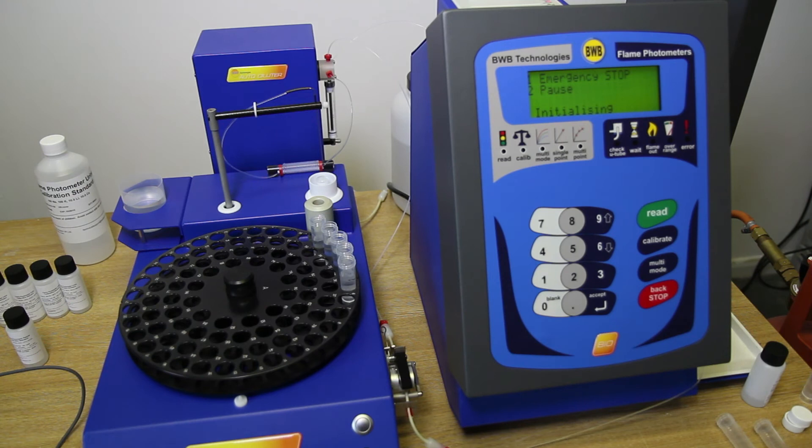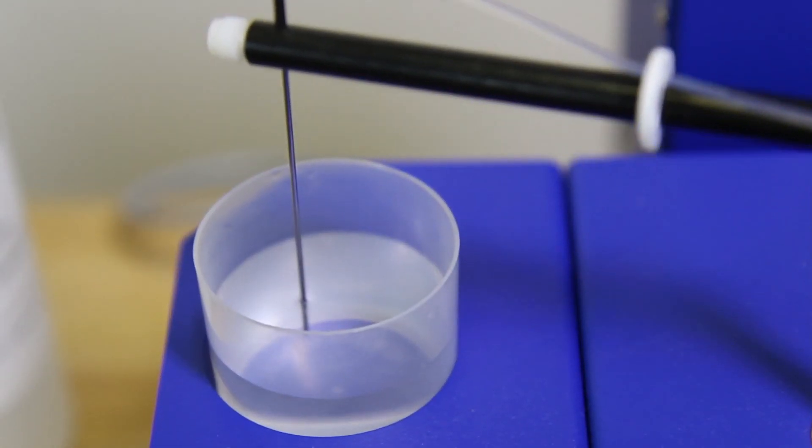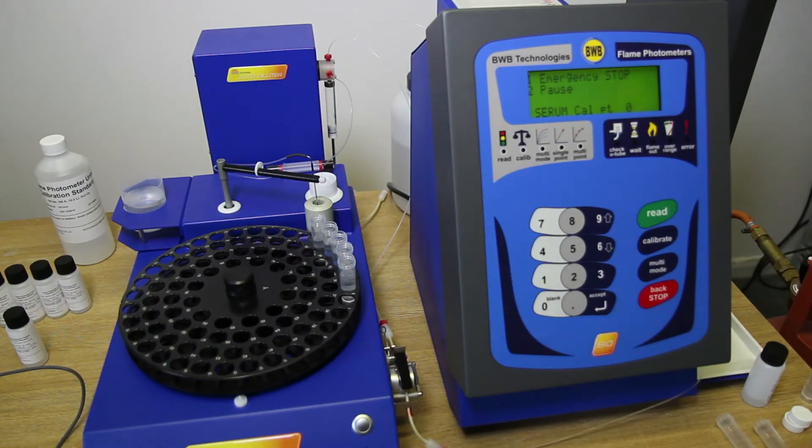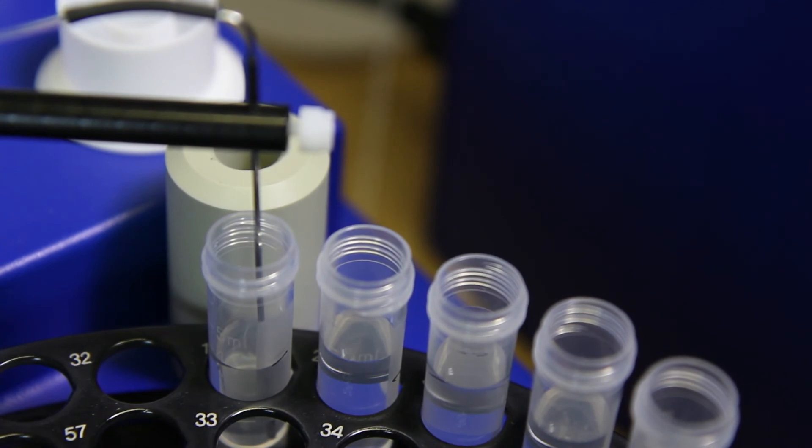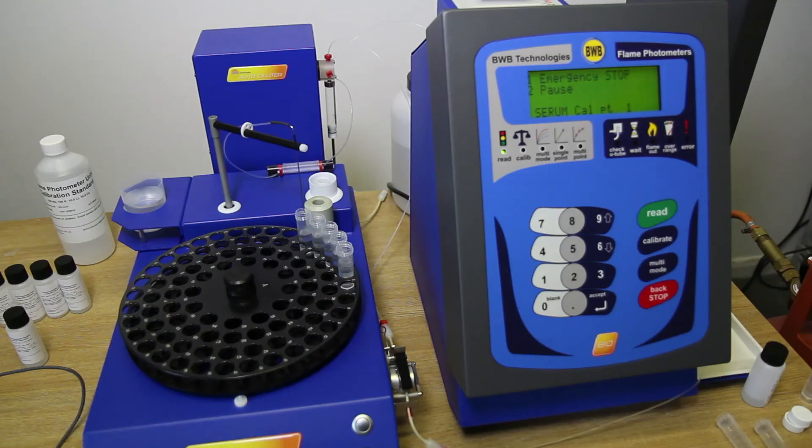The AFHS initializes and positions the carousel for reference solution 1. The BWB Bio will then flush the zero sample using fluid from the reservoir. Calibration of point 1 will then begin automatically using the solution in position 1 of the carousel.